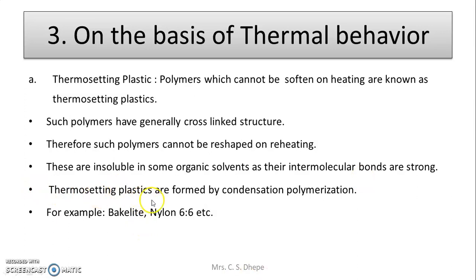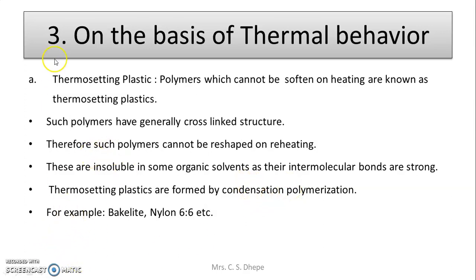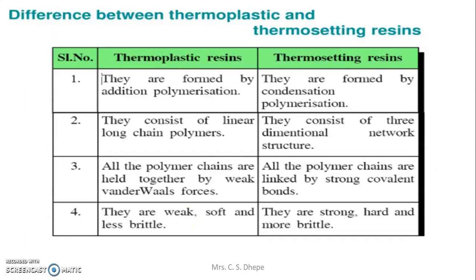Thermosetting plastics are formed by condensation polymerization, whereas the previous thermosoftening type is formed by addition polymerization. Examples of thermosetting plastics are bakelite and nylon 66.